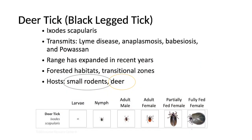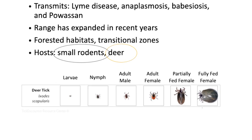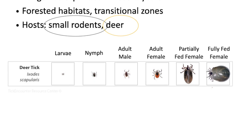Their hosts are small rodents and deer, but as we all know they will also feed on humans. Down here is a picture from Tick Encounter, a really good resource through URI, where you can look at photos of ticks in different stages of their life and in different stages of being fed on blood — because their body will expand and they'll look very different. Down here we have the larval stage — super tiny, very hard to see. I've found some on myself before; it's really tiny, less than a freckle.